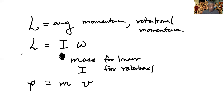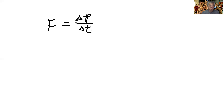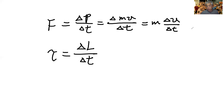We know that F equals ΔP/ΔT. So for the linear case, that's delta of mv over delta T. If mass is constant, it comes out, giving delta v over delta T, which is acceleration — so you get F = ma, which goes back to Newton's second law.